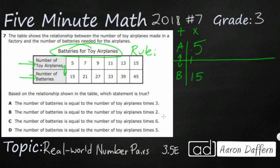Let's see what happens if we add. If we add 10, five plus 10 makes 15 — that works. Let's see if that translates to our next one: 7 plus 10. No, that's not going to work — 7 plus 10 is 17, not 21. So if addition is not going to work, let's see what happens if we try multiplication.